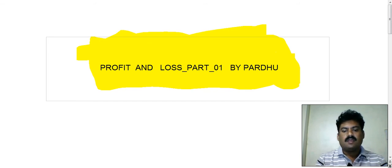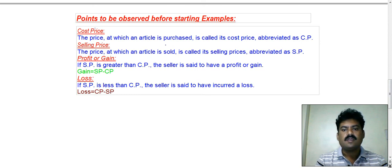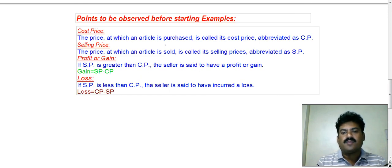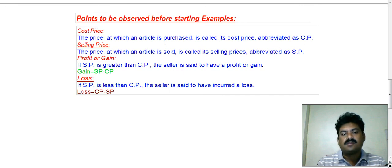Here we are going through the important formulas required to deal with profit and loss. When an item has been purchased, the amount we are investing while buying it is called the cost price or buying price. Both terms are the same — cost price is the total investment made on an item while purchasing it.